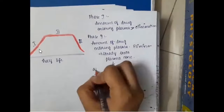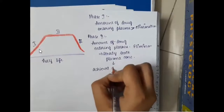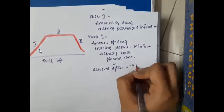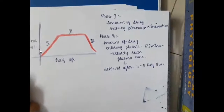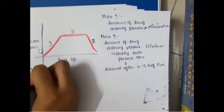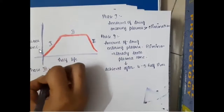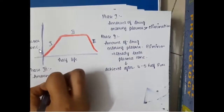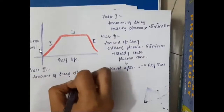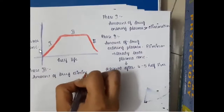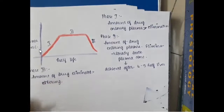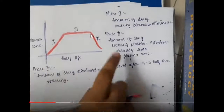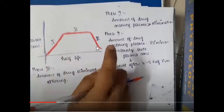This steady-state plasma concentration is achieved after four to five half-lives. In phase three, the amount of drug eliminated is more than the amount of drug entering the plasma, so you will see a downslope.